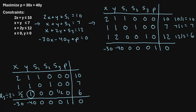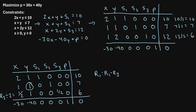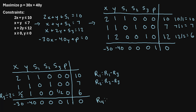We've made our pivot element equal to 1, but we want to make every other value in that column — this value, this value, and this value — equal to 0. If we take row 1 and subtract row 3, that produces a 0, which is what we want. So row 1 becomes row 1 minus row 3. Similarly, row 2 becomes row 2 minus row 3. To make the negative 40 equal to 0, we multiply row 3 by 40 — giving 40 — then add the negative 40 to get 0. So row 4 becomes 40 times row 3 plus row 4.